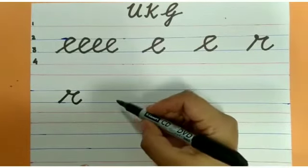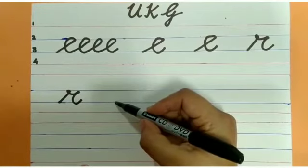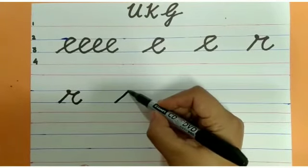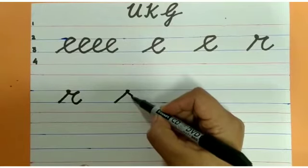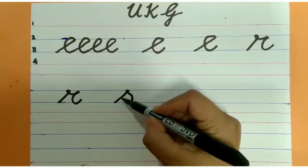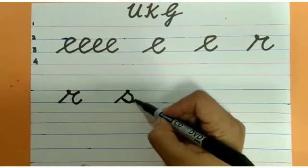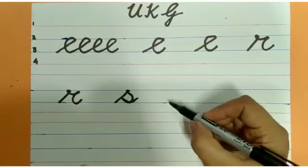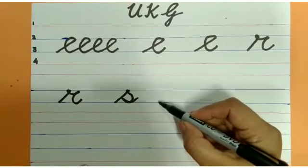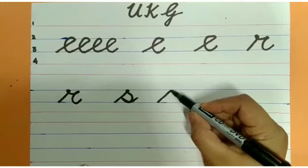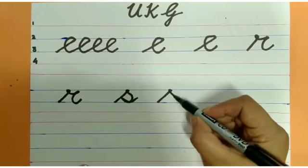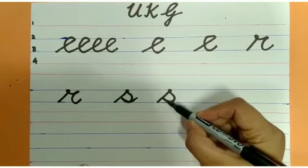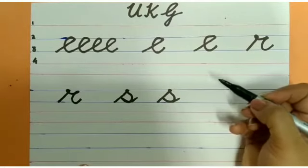Now we will learn S. Go up slanting, touch the blue line, make a loop, come down, touch the previous line and make a tail. Let us start again. Go up slanting, make a loop, go close to the line and make a tail.